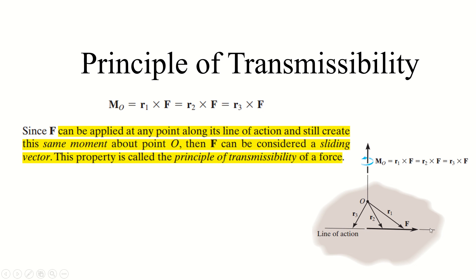This means the force can be applied at any point along its line of action — here, at this point, or at any other point along that line — and the resulting moment produced about point O will not be altered. This is shown as r1 cross F = r2 cross F = r3 cross F.